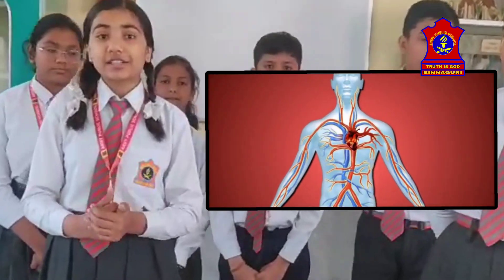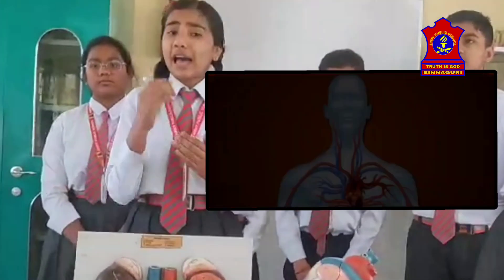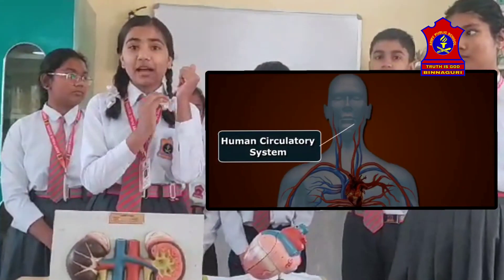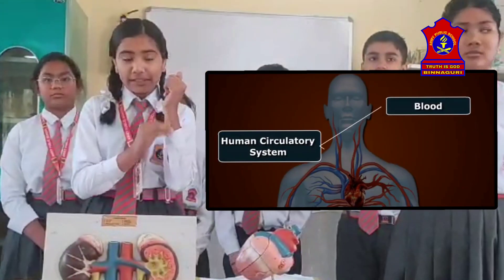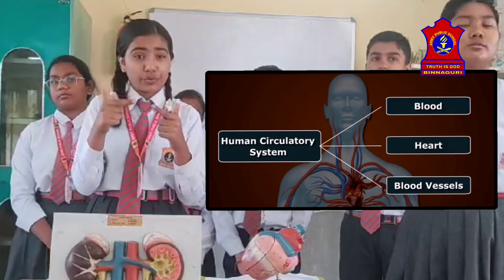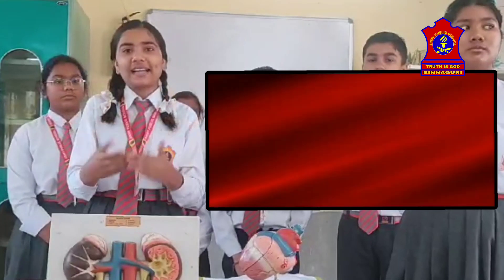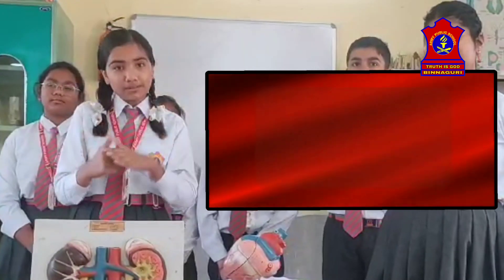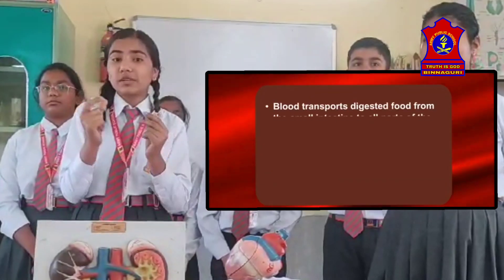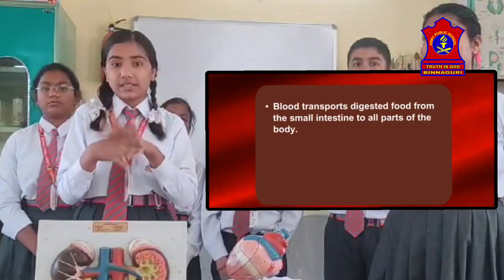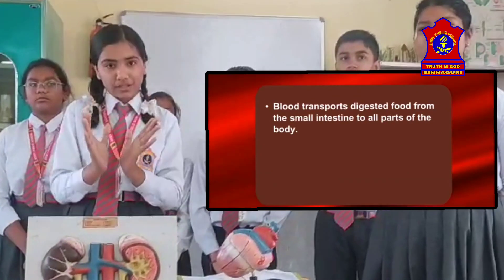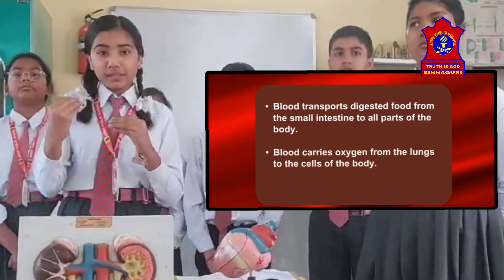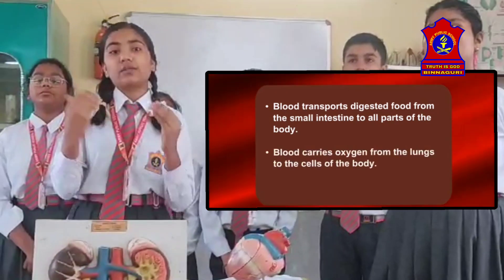In the circulatory system, we learn about blood. Have you ever noticed that whenever you have a cut on your body, something flows out? That is known as blood. Blood is a fluid which flows in blood vessels. It transports substances like digested food from the small intestine to all parts of the body. It also carries oxygen from the lungs to the cells of the body.